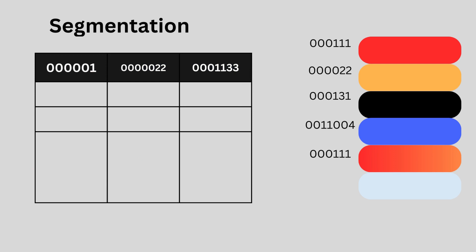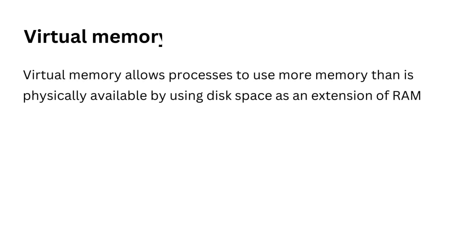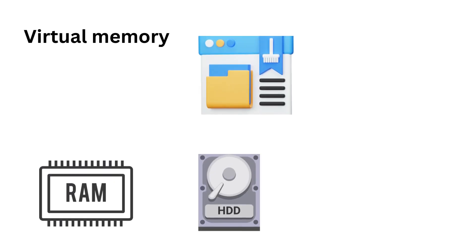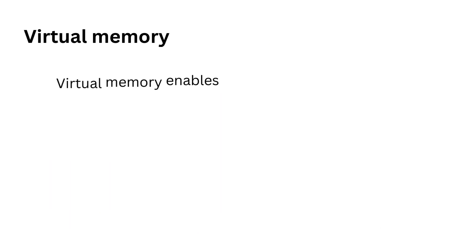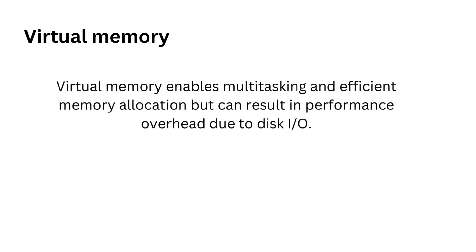Virtual memory allows processes to use more memory than is physically available by using disk space as an extension of RAM. The OS manages virtual memory by swapping pages between RAM and disk as needed. Virtual memory enables multitasking and efficient memory allocation but can result in performance overhead due to disk I/O.